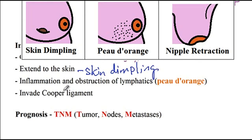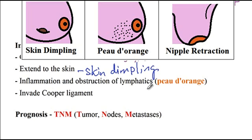Breast cancer can cause inflammation and obstruction of the lymphatics, presenting with diffuse erythema and edema — called peau d'orange — because obstruction of the lymphatics creates an orange skin appearance. Finally, breast tumors can invade the Cooper ligament, causing nipple retraction.